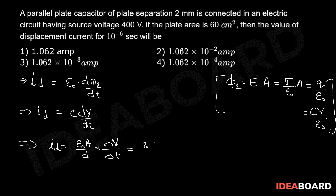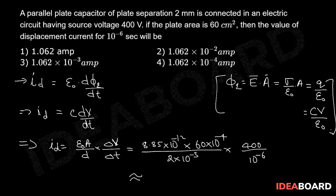Now when we substitute the values, epsilon naught is 8.85 into 10 to the power of minus 12, area 60 into 10 to the power of minus 4 m², divided by 2 into 10 to the power of minus 3 m, into 400V in 10 to the power of minus 6 seconds. This is approximately equal to 1.062.